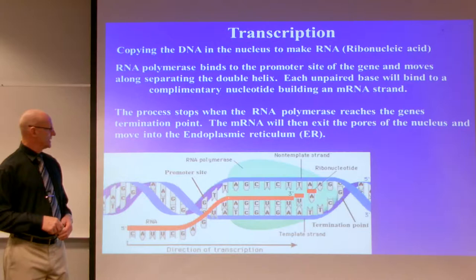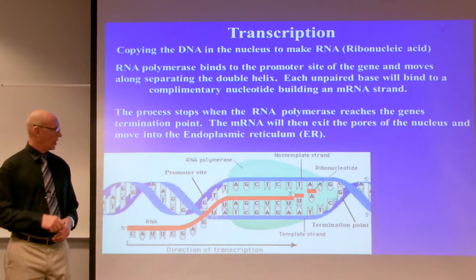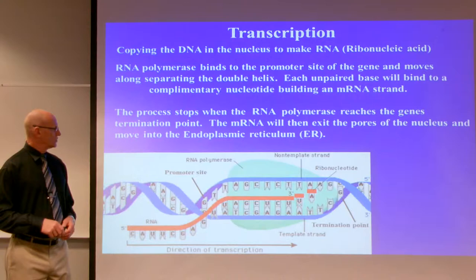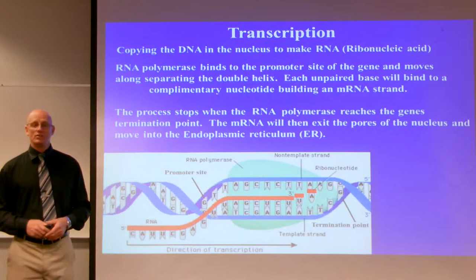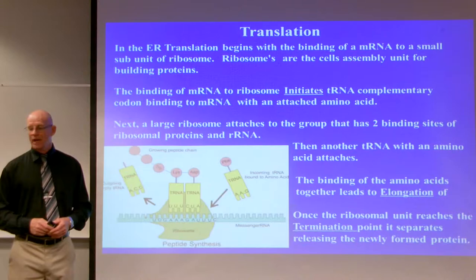As the RNA polymerase unzips the DNA, nucleotide bases come and bind to their complementary nucleotide base. For example, adenine binds with thymine, guanine binds with cytosine, and in the case of RNA, uracil binds with adenine. As they bind to these complementary nucleotide bases, they build a strand of messenger RNA. Then in translation, that RNA is exported out of the nucleus through its pores and into the endoplasmic reticulum — the ER.